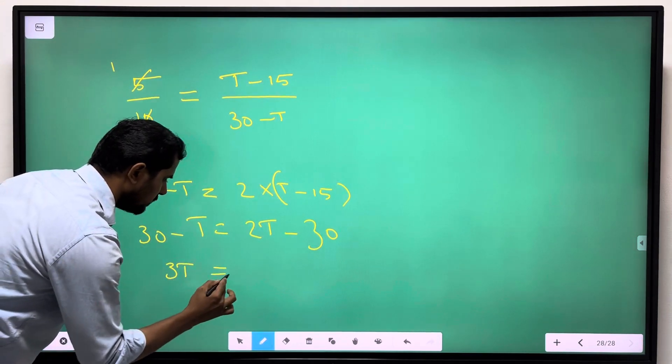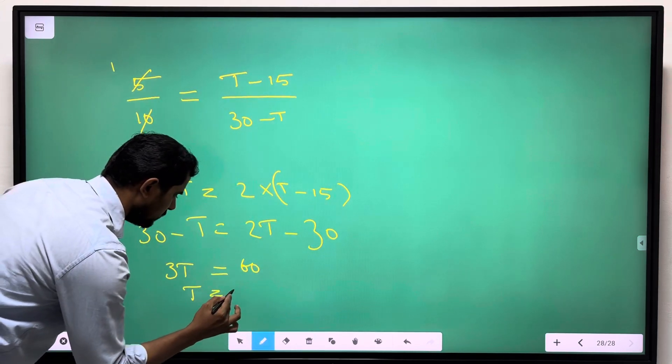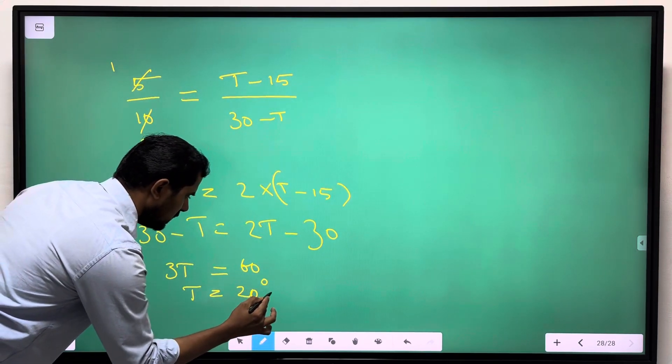3t is equal to 30 plus 30, 60. So t is equal to 20 degrees Celsius.